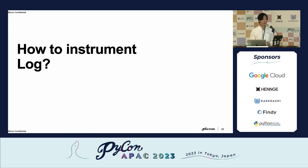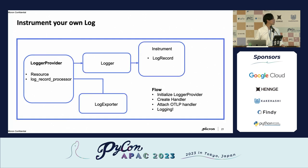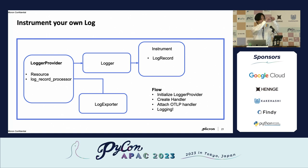Now we have the trace data — how about logs? Logs are very similar to traces. We also need to initialize a log provider, and during that we still need to determine what kind of log processor and exporter we want to use. After that, we provide the log provider to our OpenTelemetry logging handler. Then within our program we create a logger and add the handler to it, and our logger will start generating logs.